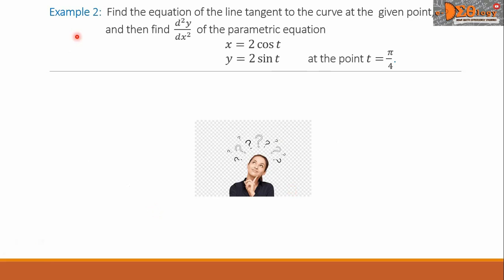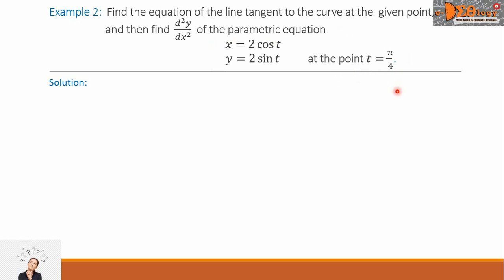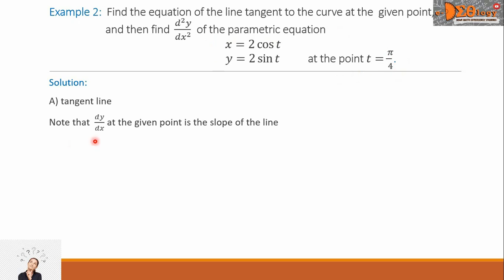Let us see this example: find the equation of the line tangent to the curve at the given point, and then find the second derivative of the parametric equation. The equations are x equals 2 cosine t and y equals 2 sine t at the point t equals pi over 4. For our solution, let us first start with the tangent line. We note that dy over dx, or the first derivative, at the given point is the slope of the line.